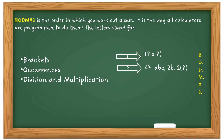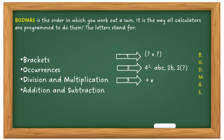Next you have Division and Multiplication. When you solely get a divide and multiply sum you can just do left to right because they're equal value, as long as there's no occurrences and no brackets. It's similar with Adding and Subtracting — both are equal value, so you can just do left to right unless there's no divide, multiply, no occurrences, and no brackets.